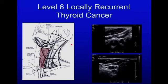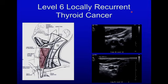Level six, or the central compartment, is medial to the common carotid artery. Here is the common carotid artery and here is the trachea. In another patient, these lesions medial to the common carotid artery are in level six, which is a common place to find locally recurrent thyroid cancer after thyroidectomy.